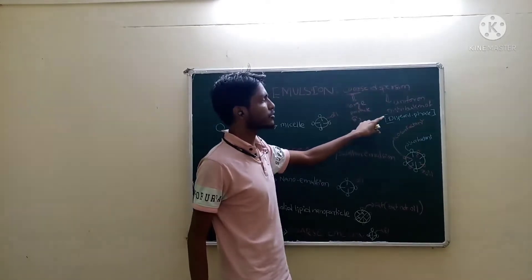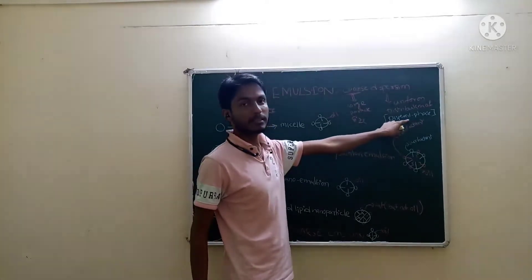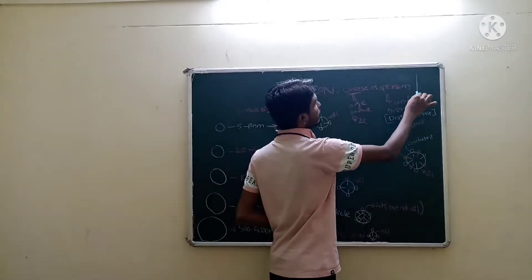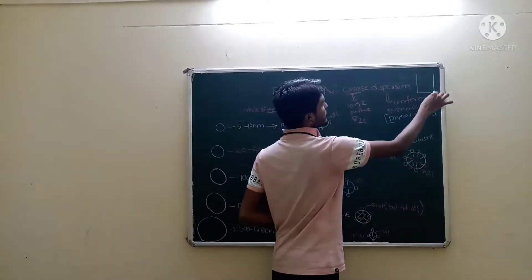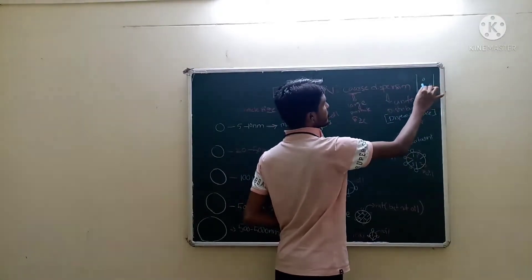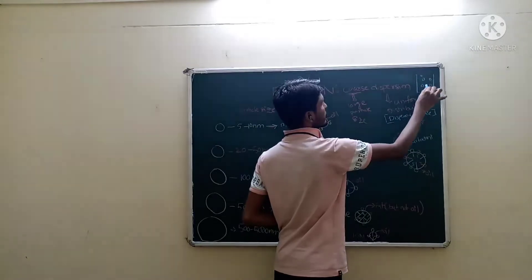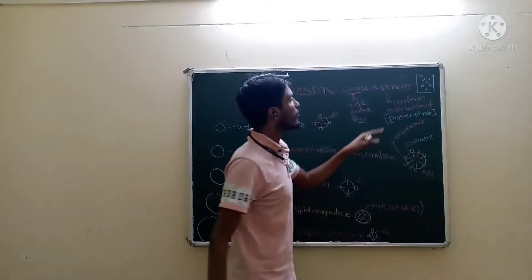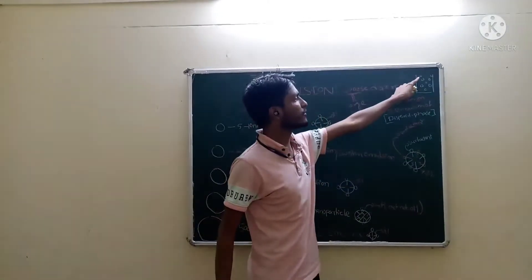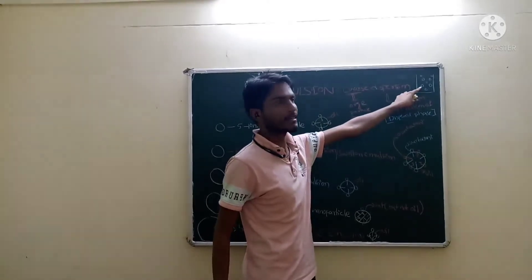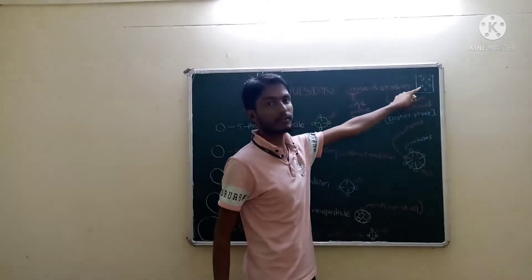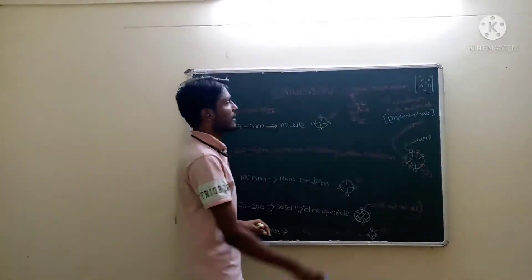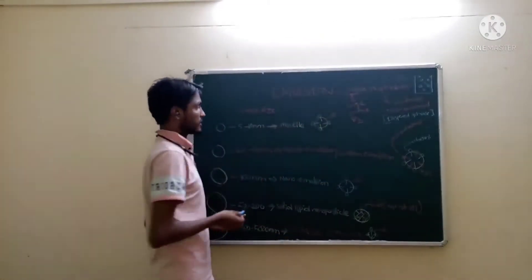Dispersion means uniform distribution of the dispersed phase — like this. Uniform distribution of the dispersed phase. We can call it a coarse dispersion.